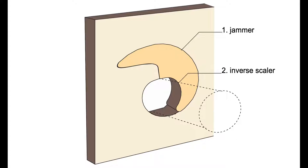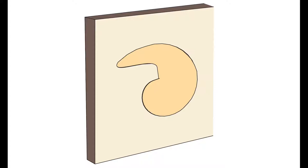The kerf canceling bearing consists of two designed elements: the jammer and the inverse scalar. If we look at the jammer in isolation, we see that the shape of the outside is a nautilus spiral.